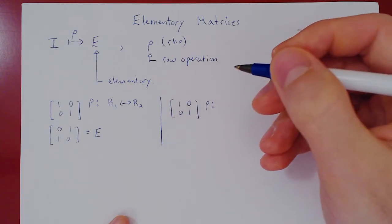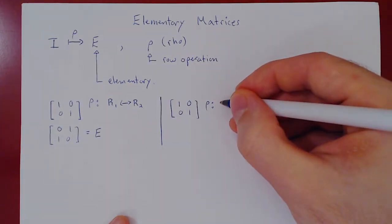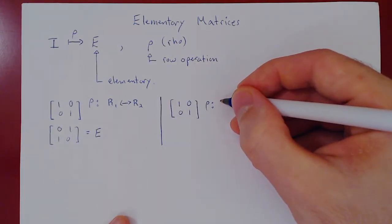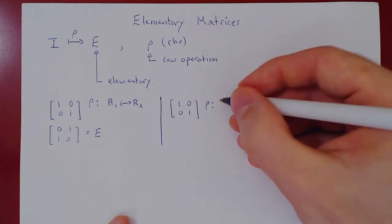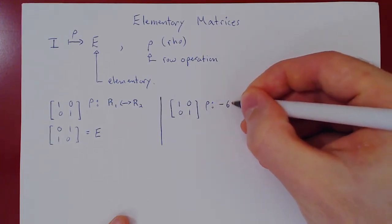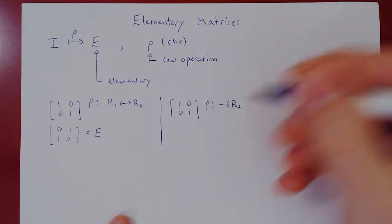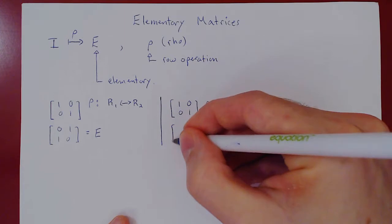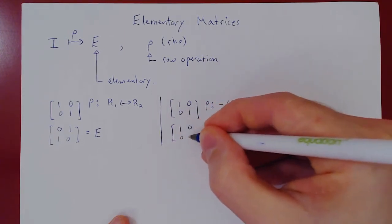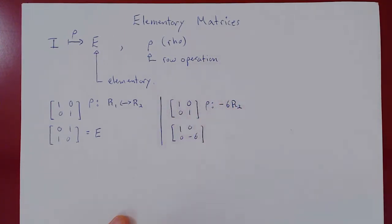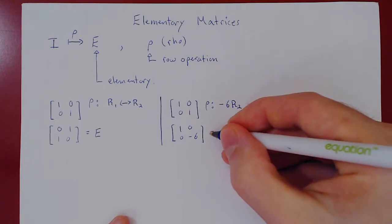We could start with I: 1, 0, 0, 1, and apply a different kind of row operation. Suppose we multiply row 2 by negative 6. The matrix becomes 1, 0, 0, negative 6. And this is again an elementary matrix.